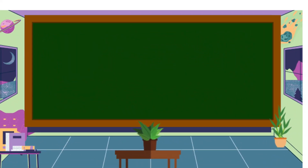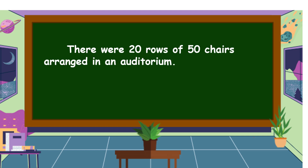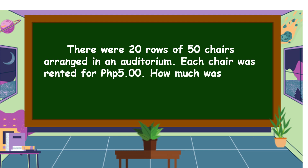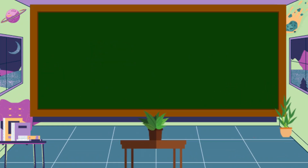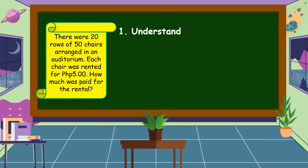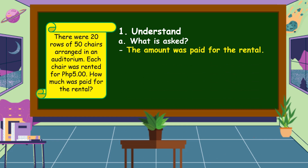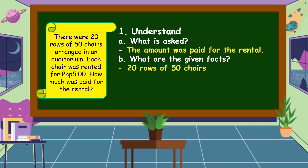Next problem. There were 20 rows of 50 chairs arranged in an auditorium. Each chair was rented for 5 pesos. How much was paid for the rental? First, we are going to understand the problem. What is asked? It is asking for the amount paid for the rental. What are the given facts? The given facts are 20 rows of 50 chairs and 5 pesos per chair.